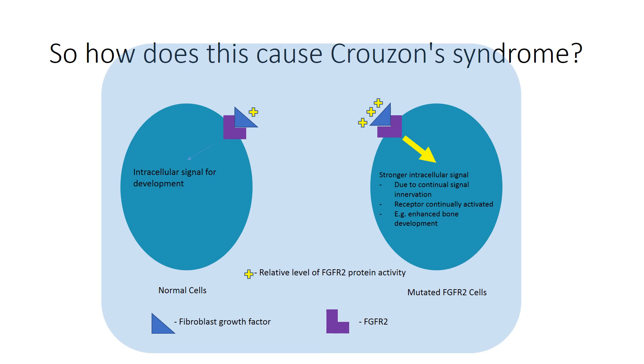Now, in terms of Crouzon syndrome, how does this actually relate to its symptoms? We know from earlier the mutated form of the receptor is continually activated. So any function such as the formation of blood vessels, or specifically in regards to Crouzon syndrome, bone growth is elevated.